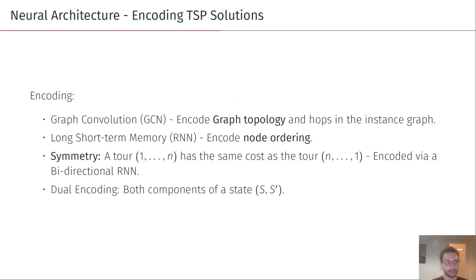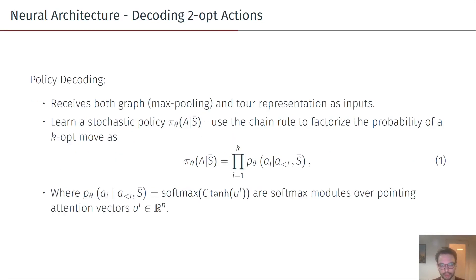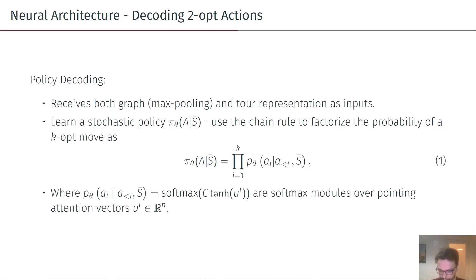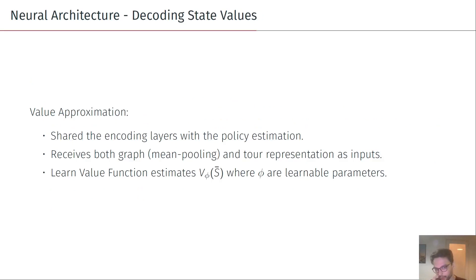In terms of neural architecture, we propose an architecture that uses encoding and decoding units. In the encoding units, we encode graph topology with graph convolutions and also encode node ordering and symmetry with a bidirectional RNN. For decoding the policy, we use both graph and tour representation as inputs and learn a stochastic policy π_θ, which uses the chain rule to factorize the probability of selecting the node pair for the 2-opt move using p_θ modules, each being a softmax over pointing attention vectors using the embedded node features.